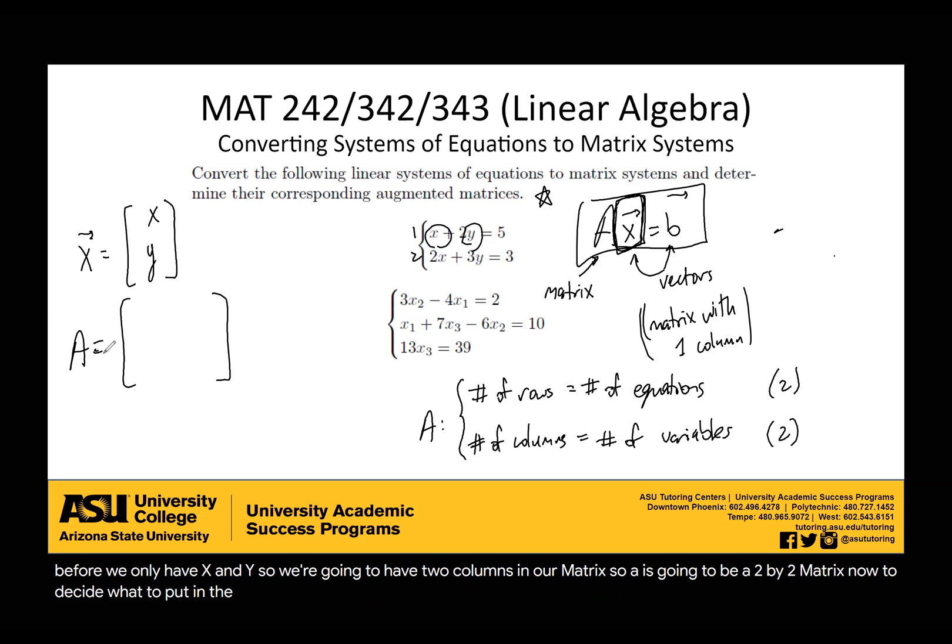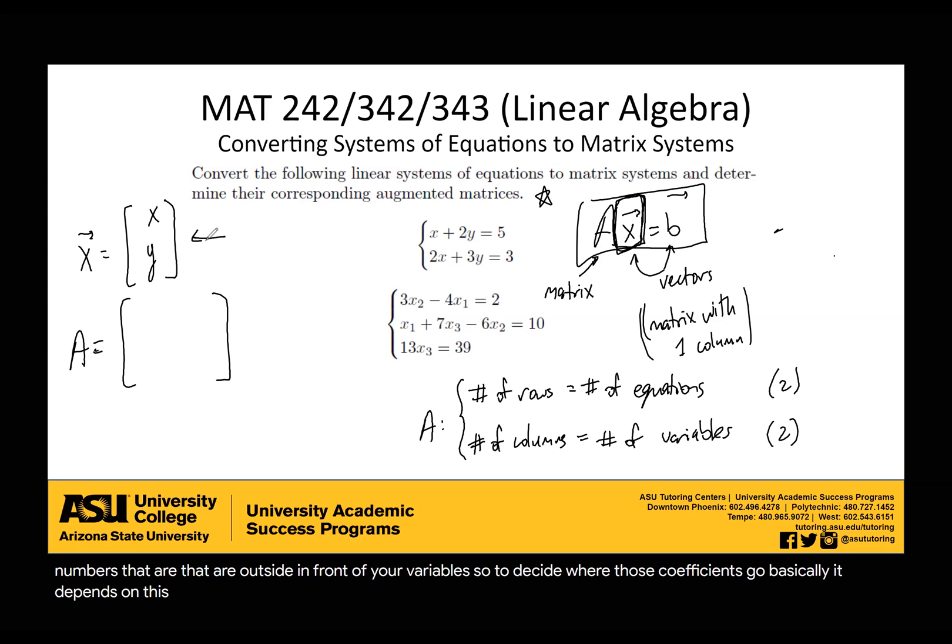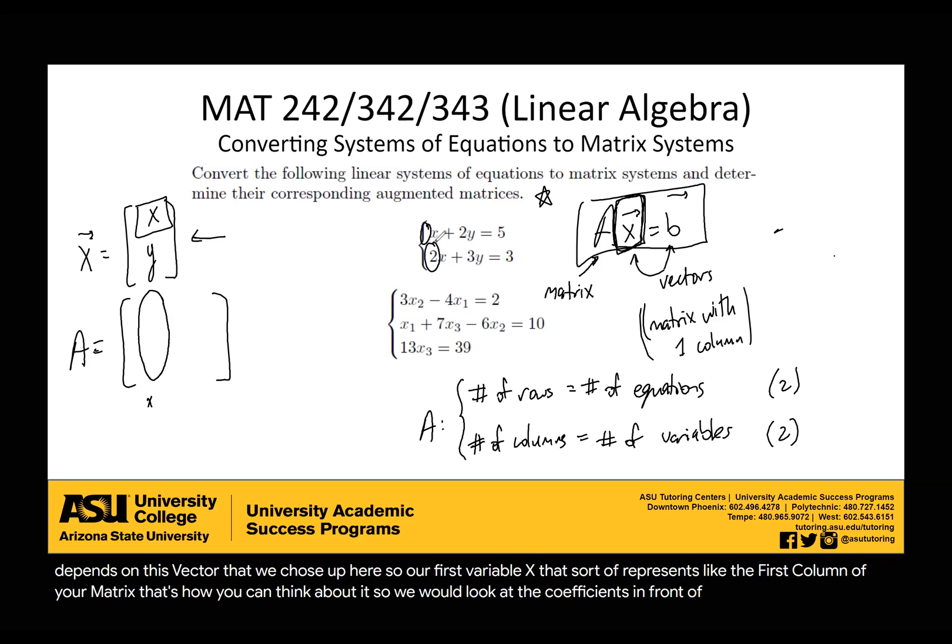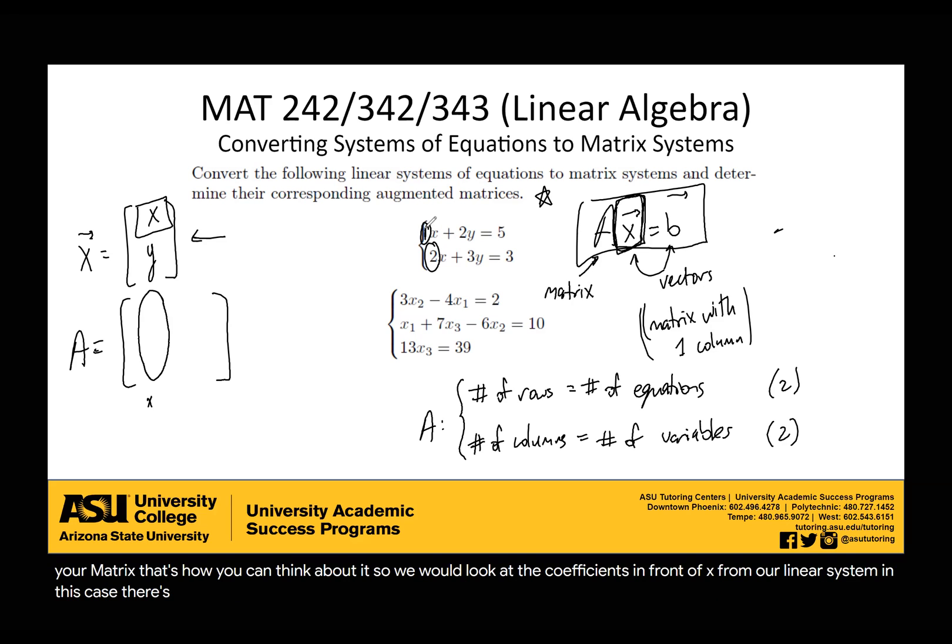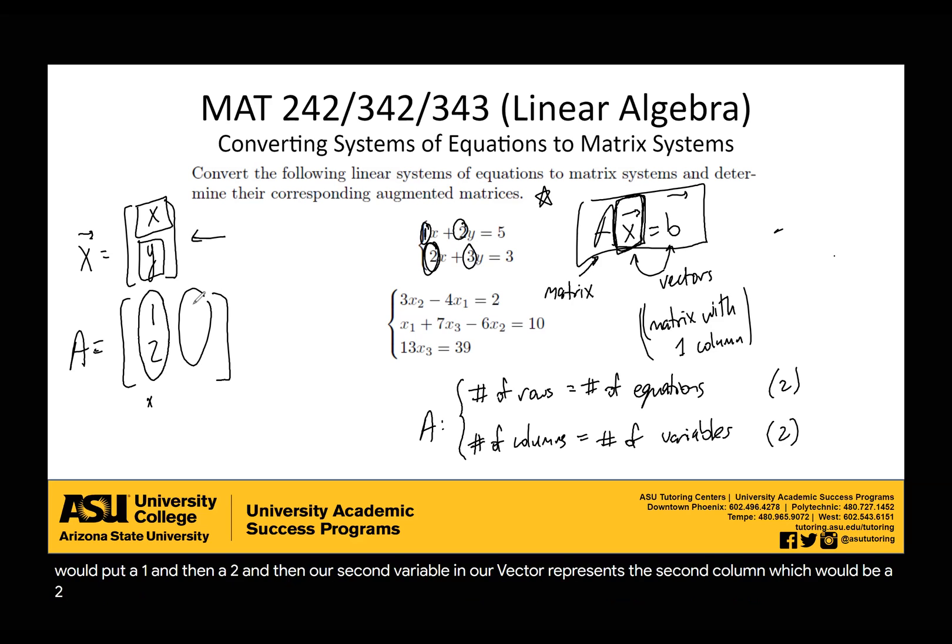Now to decide what to put in the matrix, it's always going to be the coefficients in front of your variables. So the little numbers that are outside in front of your variables. To decide where those coefficients go, it depends on this vector that we chose. Our first variable x represents the first column of your matrix. We would look at the coefficients in front of x from our linear system. There's an imaginary one in front of the first equation and a two in front of the second, so we would put a one and then a two. Our second variable y represents the second column, which would be a two and a three. So that is what our A matrix looks like.